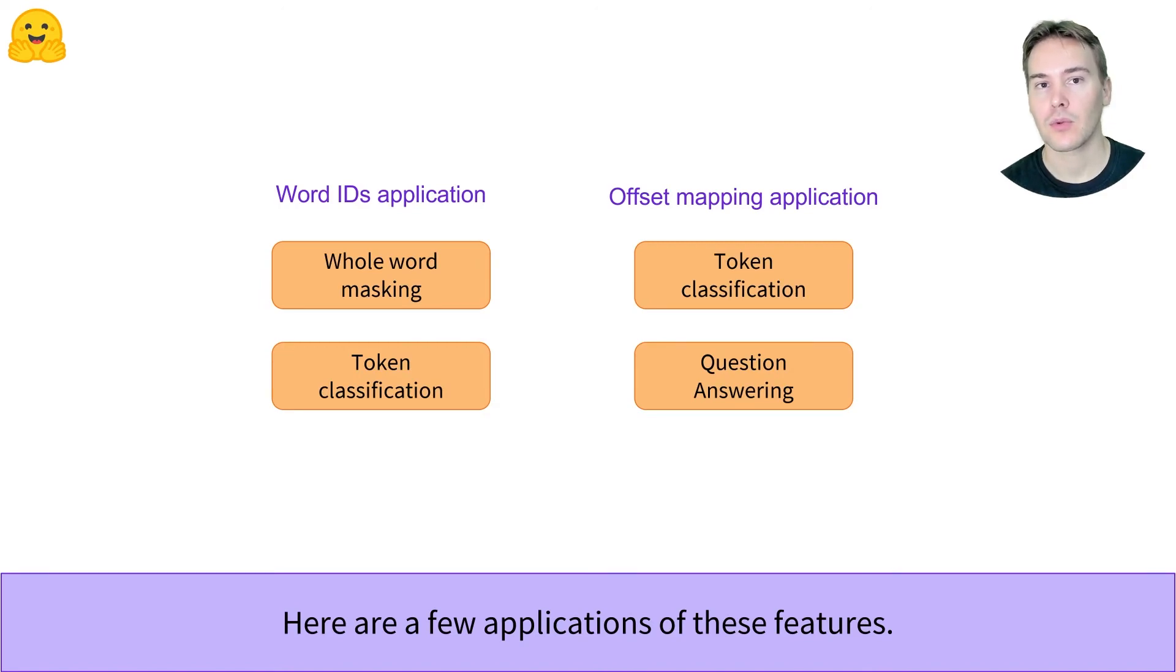As for the offset mappings, it will be super useful when we need to convert token positions in a sentence into a span of text, which we'll need to know when we're looking at question answering or when grouping the tokens corresponding to the same entity in token classification.